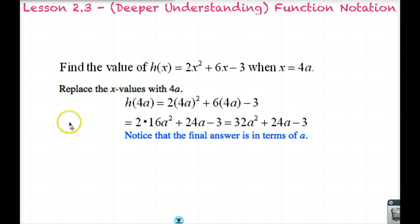Let's start with the first problem. It says find the value of h(x) = 2x² + 6x - 3 when x equals 4a. This is a quadratic equation. The way we would solve this is we would replace the x values with 4a. What you need to think about is that this 4a replaces every x value in your quadratic equation.